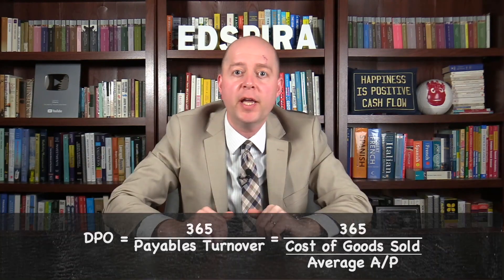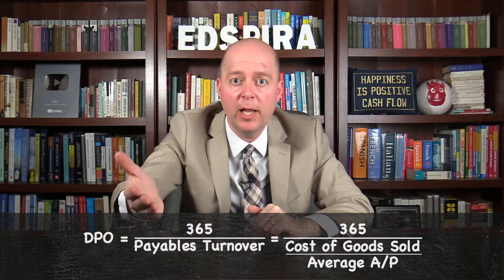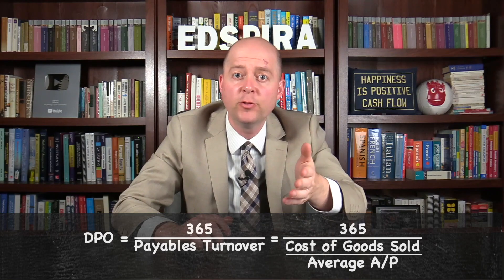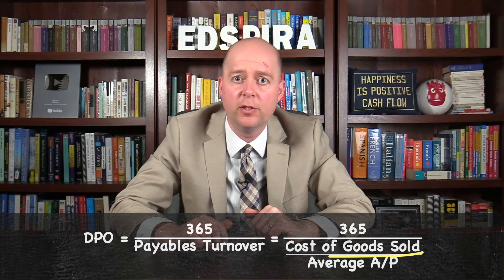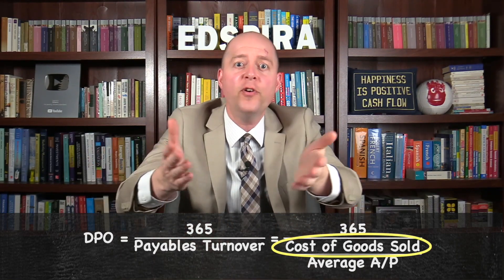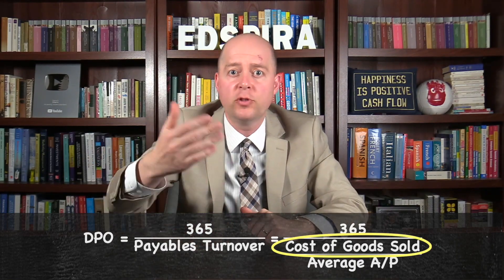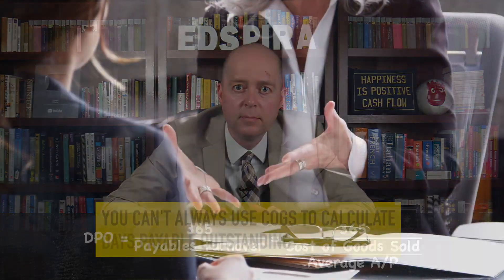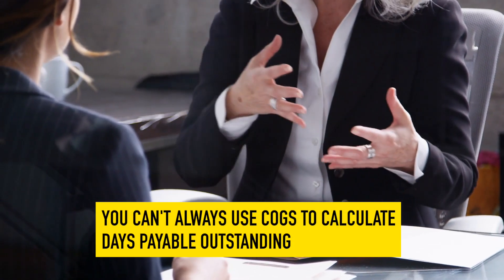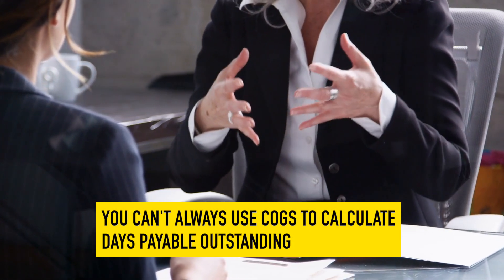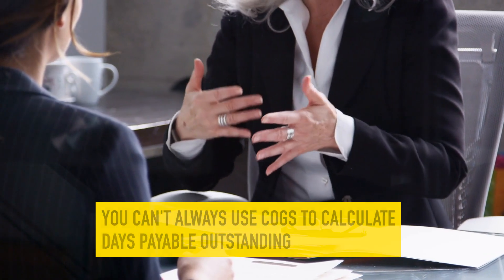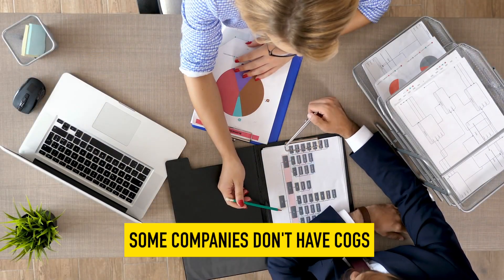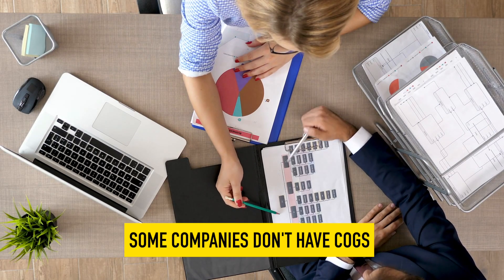Here's the formula for calculating Days Payable Outstanding using Cost of Goods Sold. Accounts Payable is usually related to Cost of Goods Sold, so it's fairly common to use it to calculate Days Payable Outstanding. However, you can't always use Cost of Goods Sold because some companies, like service providers, don't have Cost of Goods Sold.